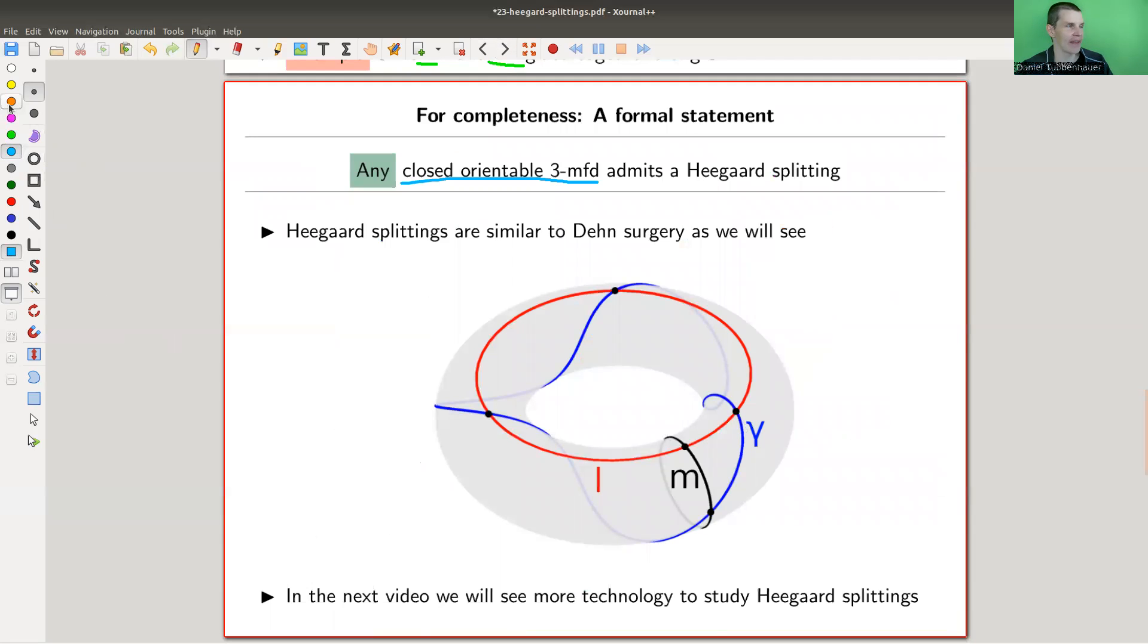And I will explain in the next video, this is very similar to the Dehn surgery that we have seen before. And of course it should be, because we described the same class of manifolds here. But for now, this is just what I would like to say. There's splitting into a doughnut and another doughnut, and the whole complexity is given by how they are glued together along a common boundary with some potentially crazy gluing map.